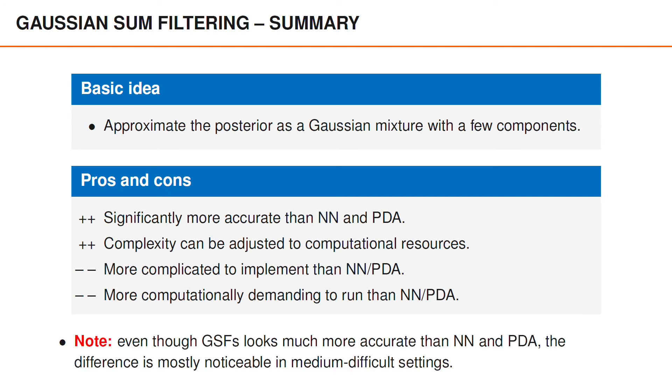In the toy examples that we studied here, there was a noticeable difference between the Gaussian sum filter and the simpler algorithms. However, if the scenario is sufficiently simpler, even the nearest neighbor algorithm performs very well. Also, if the scenario is sufficiently more challenging, all algorithms will lose track of the object. It is therefore mostly for medium challenging scenarios that the Gaussian sum filter will shine and yield considerably better performance than nearest neighbor and probabilistic data association.